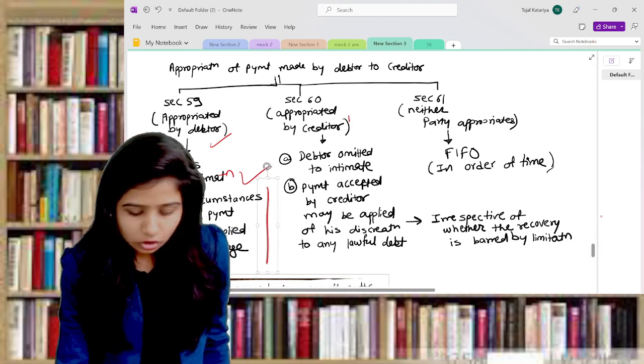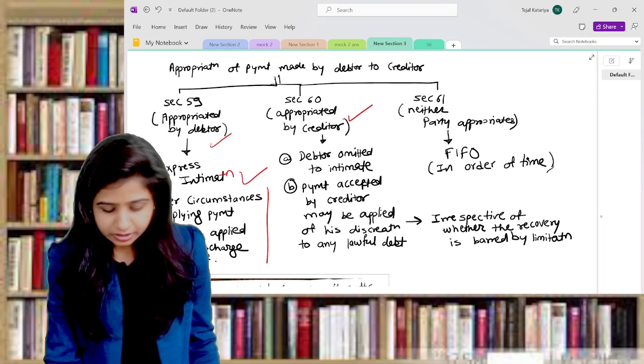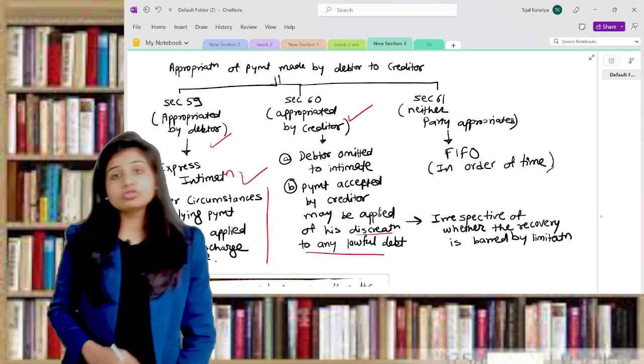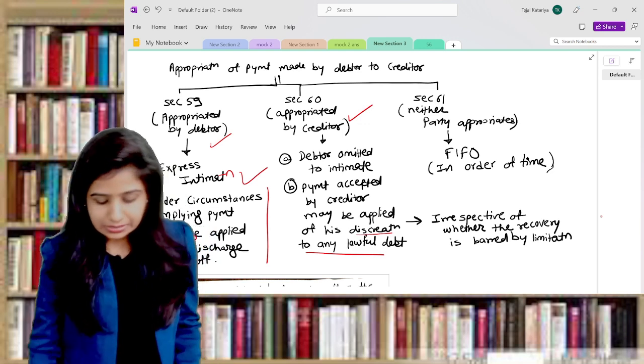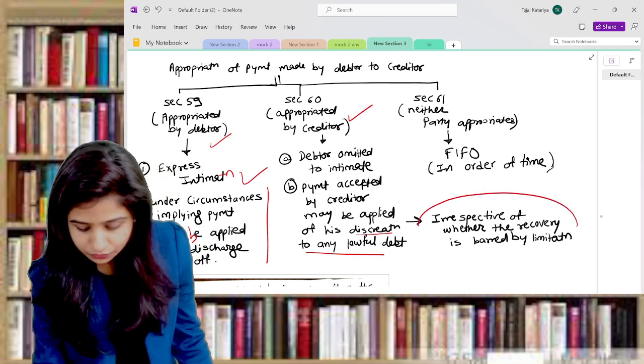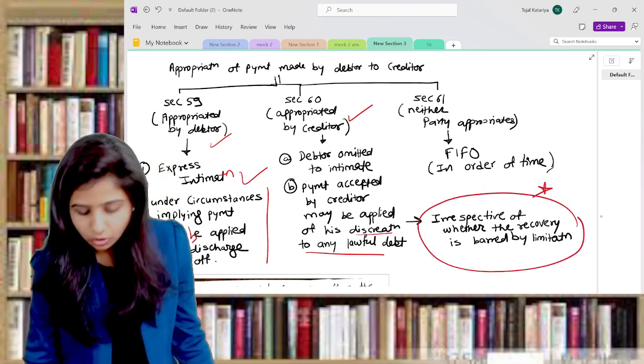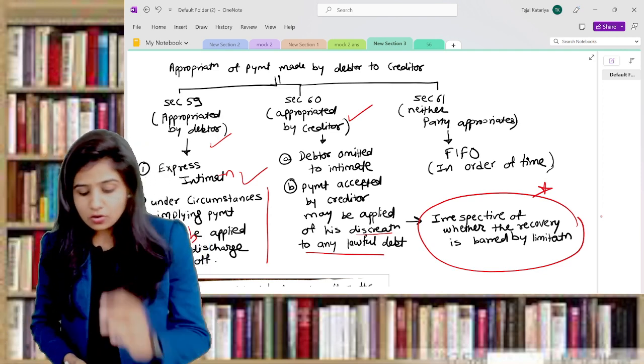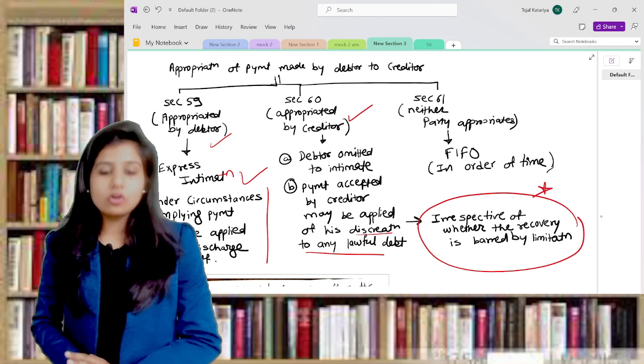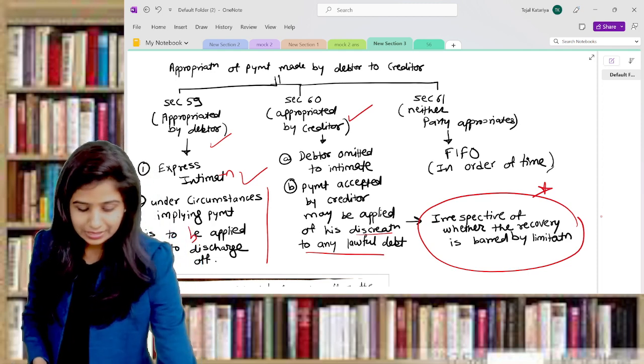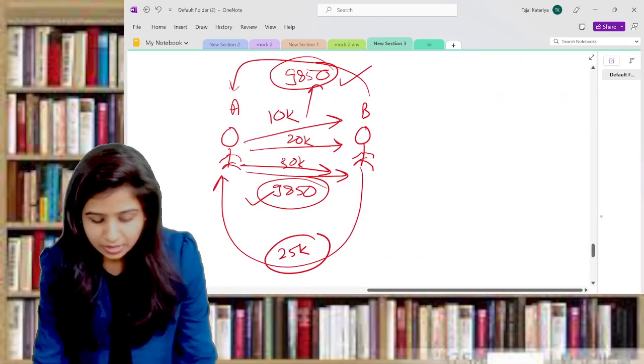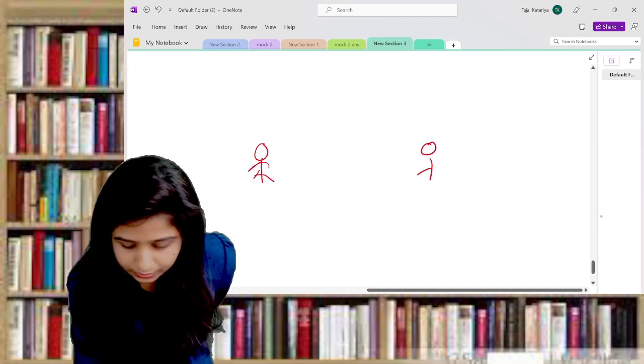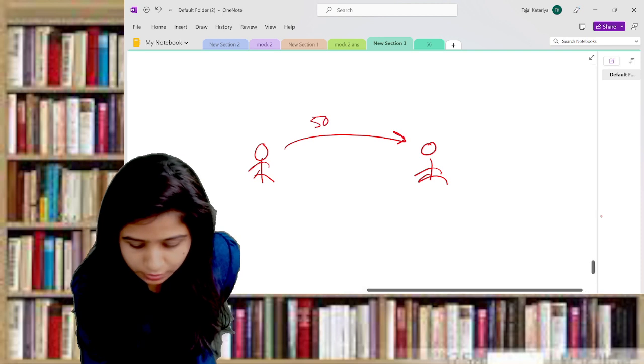The second situation is where debtor is not appropriating, debtor is not intimating anything to the creditor. So it's always the discretion of the creditor against which lawful debt he wants to set off. In this situation, understand this is very important - the crux of your section number 60 - irrespective of whether the recovery is time barred or not or barred by limitation.